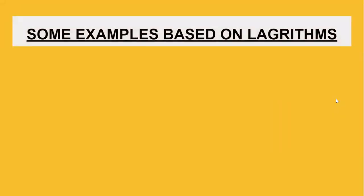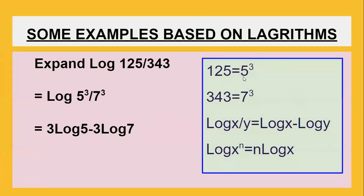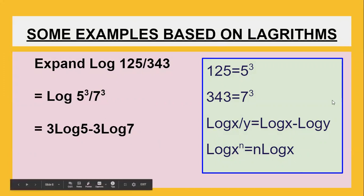Now we will discuss some four-mark questions. The problem: expand log (125 by 343). By prime factorization, 125 can be written as 5 cubed, and 343 can be written as 7 to the power of 3. Since division is there, we put minus. Then applying the power rule, the 3 comes in front — giving 3 log 5 minus 3 log 7.